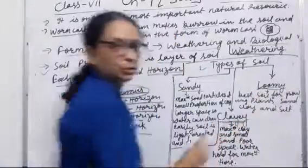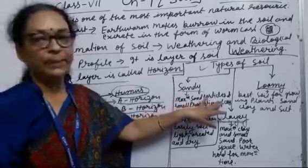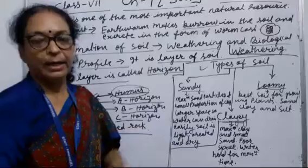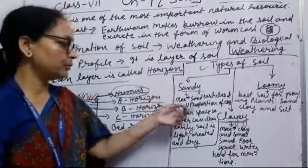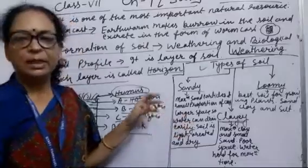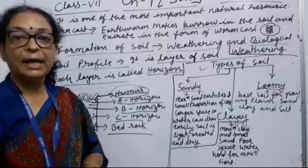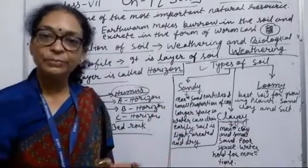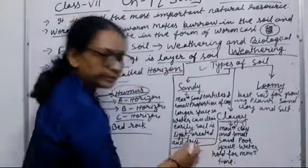Second is clay, and third is loamy soil. Sandy soil means maximum sand particles and minimum or small proportion of clay. Sandy particles are very large, which creates large spaces where water can drain. So the soil is light, aerated, and dry.